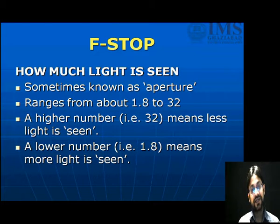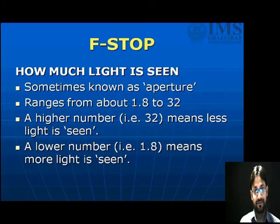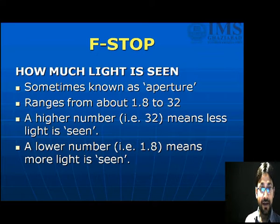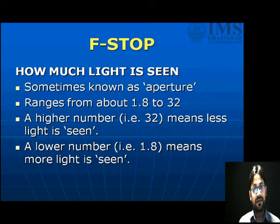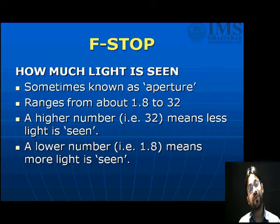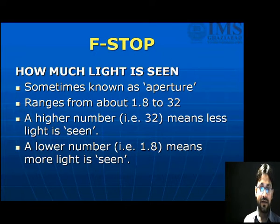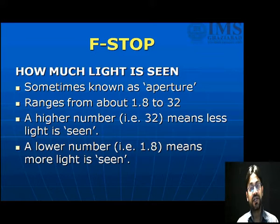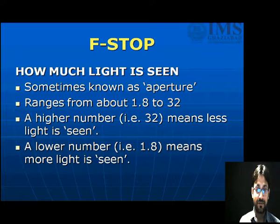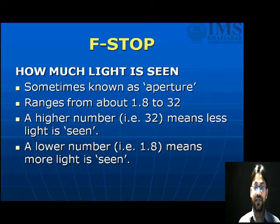F-stop — exactly what is f-stop? F-stop is a number of the aperture. Aperture is an important key of the camera which controls the amount of light for the sensor. F-stop is also known as aperture. The range of aperture is about 1.8 to 32. 32 is the maximum range of aperture size and 1.8 is the minimum size. A higher number — that is 32 — means less light is seen, and 1.8 means maximum light is seen.